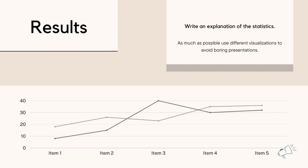One important thing to keep in mind when presenting results is to use different visualizations as much as possible to avoid boring presentations. If you answered specific objective number one through a table, consider using a paragraph, line chart, pie chart, or any other visualization for the next objective. Using varied presentations makes your work more interesting to the audience, both in the manuscript and in the PowerPoint presentation.